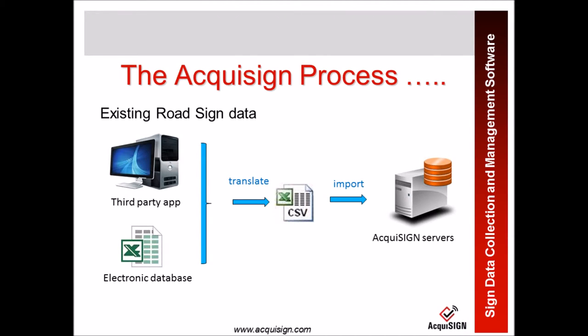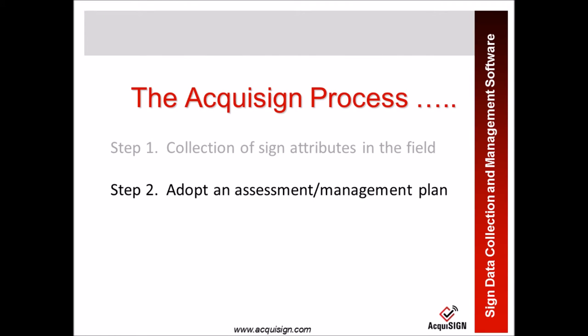Another method for getting data into our servers is if you are using a third-party app or electronic database. You can send that to our techs, who will translate it into a CSV file and then import that data into our Aquasign servers.